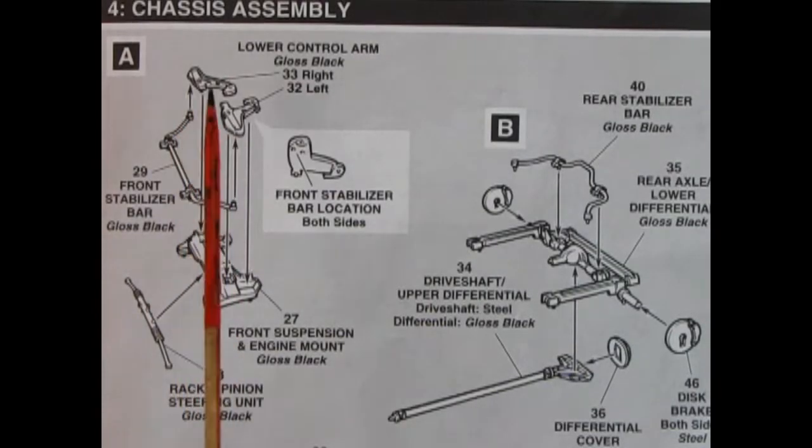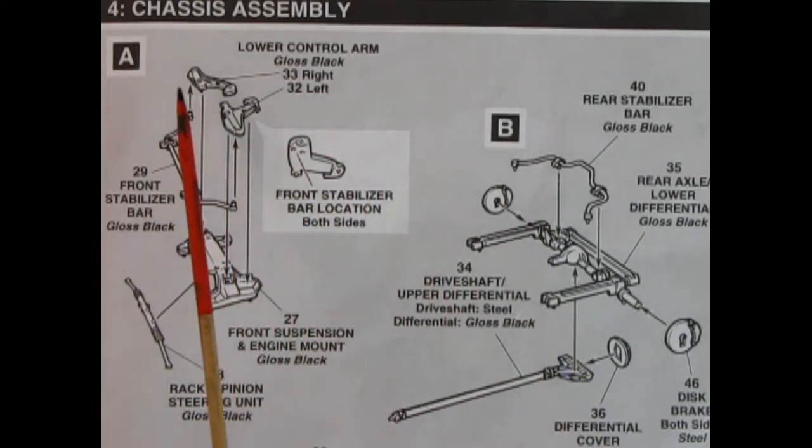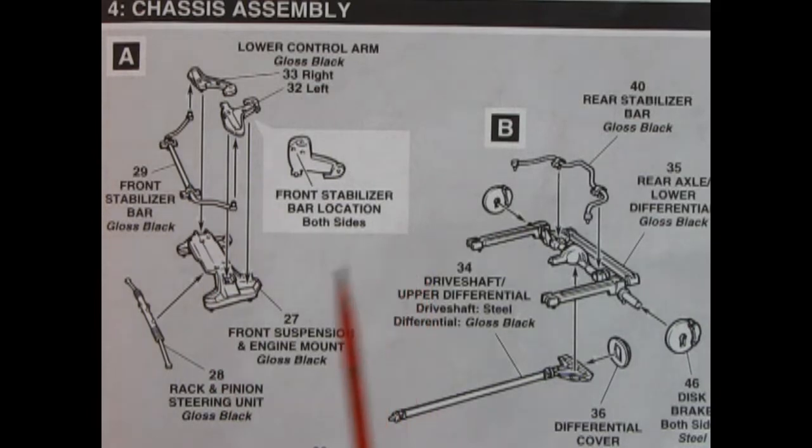Step four is our chassis assembly and we can see there's a lot going on for this kit. You have two lower control arms, your front stabilizer bar, your front suspension mount and engine mount as well as the rack and pinion steering unit. Here it shows the front stabilizer bar location being put into that first hole so that's really helpful.